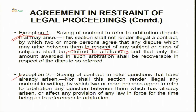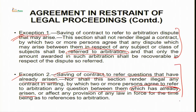There are two exceptions to section 28. First: saving of contract to refer to arbitration disputes that may arise. This section shall not render illegal a contract by which two or more persons agree that any dispute which may arise between them in respect of any subject shall be referred to arbitration and that only the amount awarded in such arbitration shall be recoverable. Second exception: saving of contracts to refer questions that have already arisen — parties can opt for arbitration even at a later stage after the dispute has arisen.